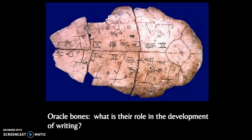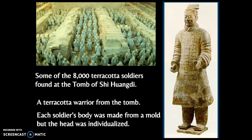I think this is a tortoise shell, and you can see the cracks. They might place it in fire or use other means of cracking it, and depending on how it cracked would give them indication of what the ancestors might be revealing. Think about what role these oracle bones play in the development of writing — if they're trying to communicate with their ancestors, the Chinese developed one of the earliest forms of writing.